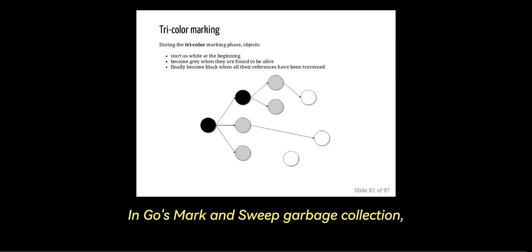In Go's mark and sweep garbage collection, the three-color marking algorithm helps track which objects are reachable and which are not. This process prevents cyclic dependencies and safely identifies garbage. Step one is white. Initially all objects are marked white, meaning they are unvisited and presumed garbage unless marked otherwise.